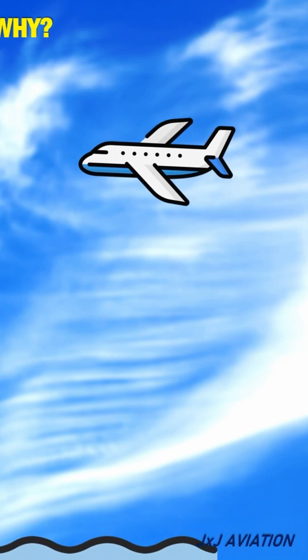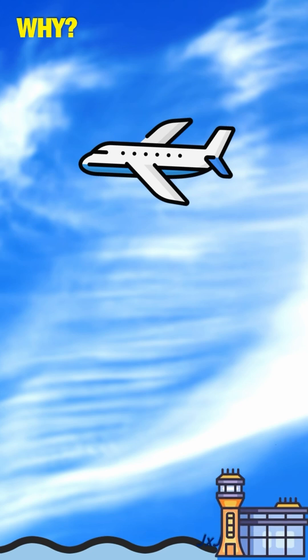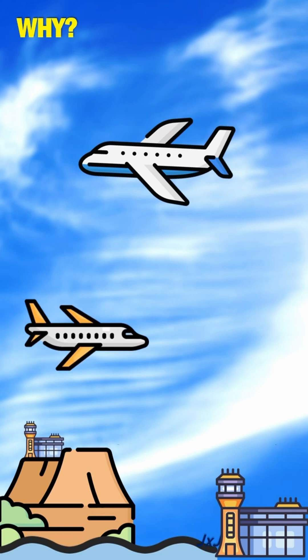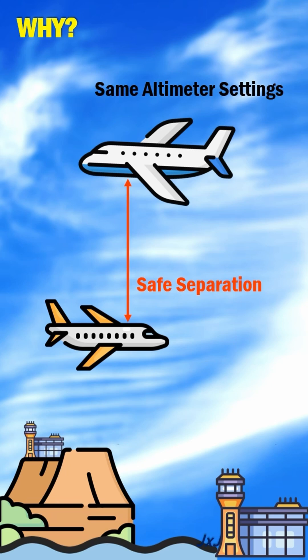Why is the standard setting used? Even if an aircraft takes off from an airfield at sea level or from an airfield at higher altitudes, only if these aircraft have the same altimeter settings, a safe vertical separation can be provided between them.